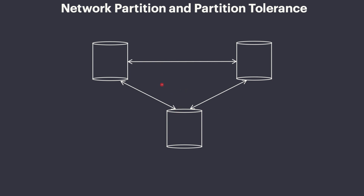Now imagine there is a network issue between Europe and North America, which means the node in North America cannot access the nodes in Europe, and similarly the nodes in Europe cannot access the node in North America. This is basically a partitioned network — we have two siloed nodes working on their own.